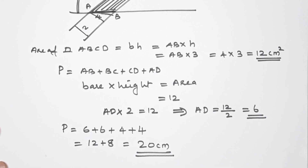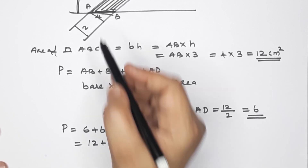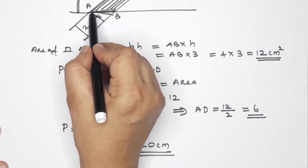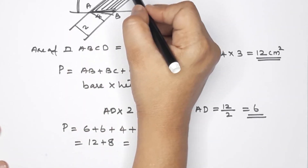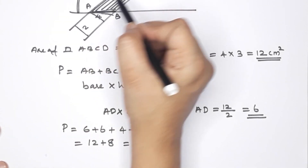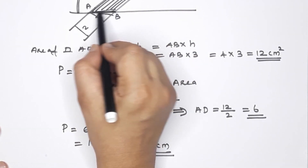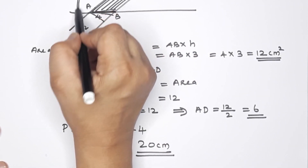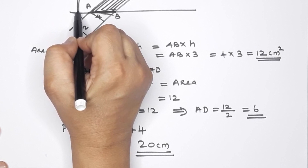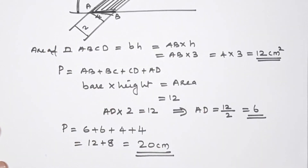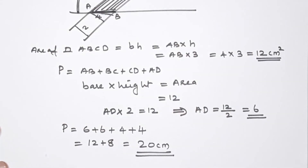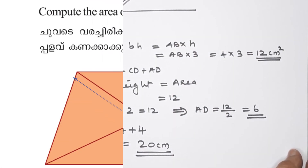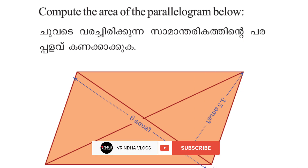Clear? Okay. That is it — two pairs of parallel lines forming the parallelogram. The base and height are identified. Clear? Okay. Next question.